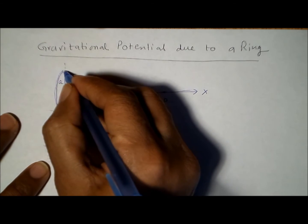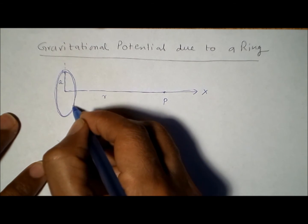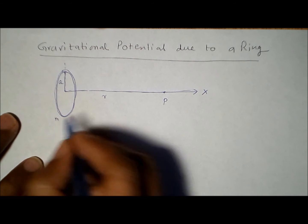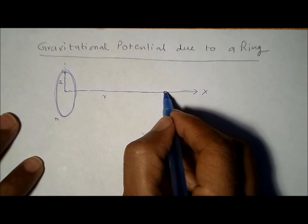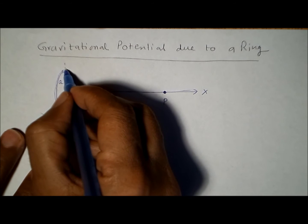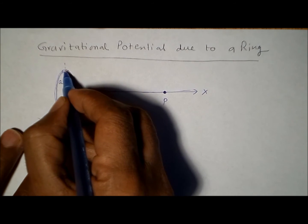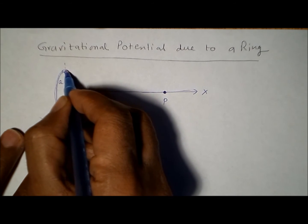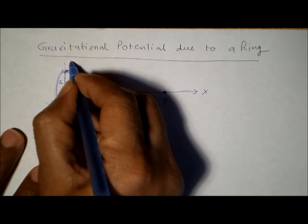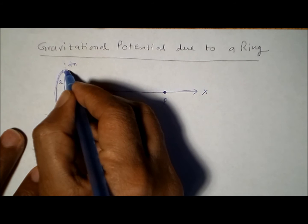The ring is a thin ring and it has a total mass of m. So to find the electric potential at this point P, what we want to do is we will take the help of integral calculus. We would like to find out the potential due to a small mass dm.